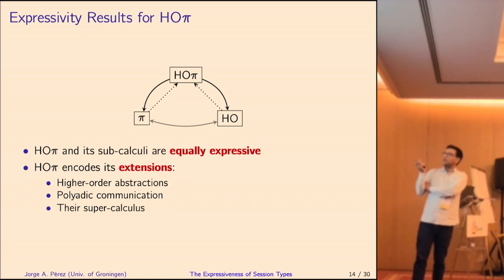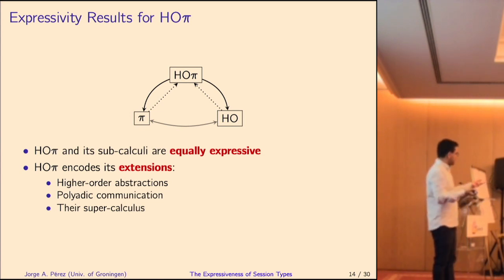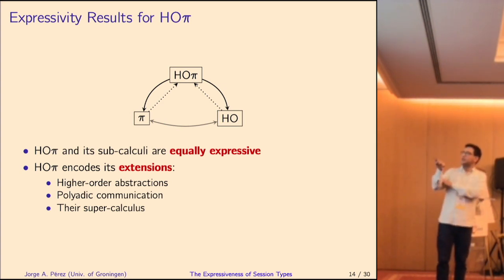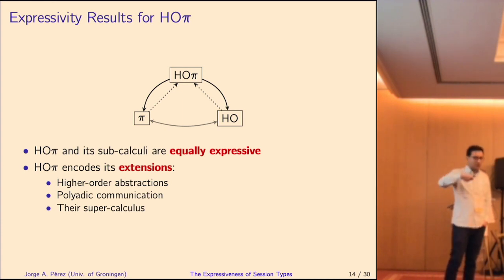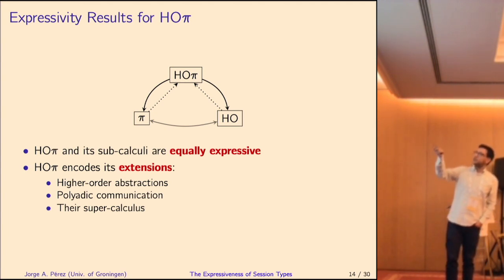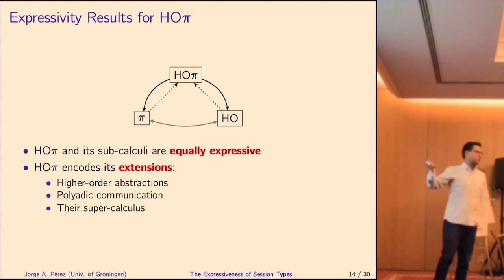One of the interesting things is that encoding process passing into the first-order setting is well-known — this is what Sangiorgi did. The other direction, encoding name passing using functions, is crucially enabled by the presence of session types: we could do that because types were guiding the translation. There was also a non-trivial use of non-contractive session types. The extension of these languages with higher-order abstractions, polyadic communication, and the combination of everything — everything is encoded. Every arrow you see corresponds to a formal theorem preserving types and preserving operational correspondence.